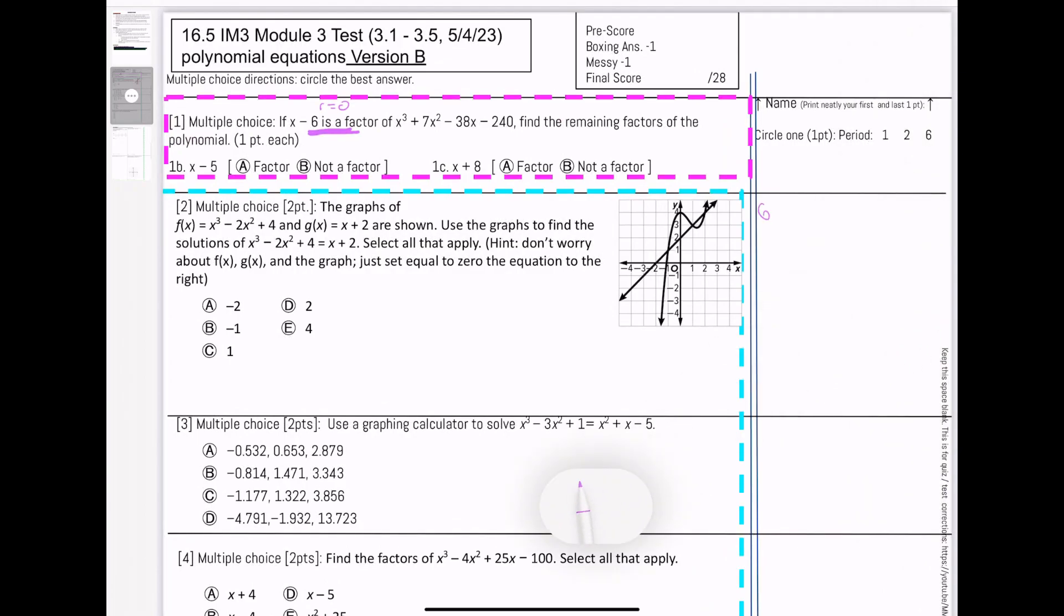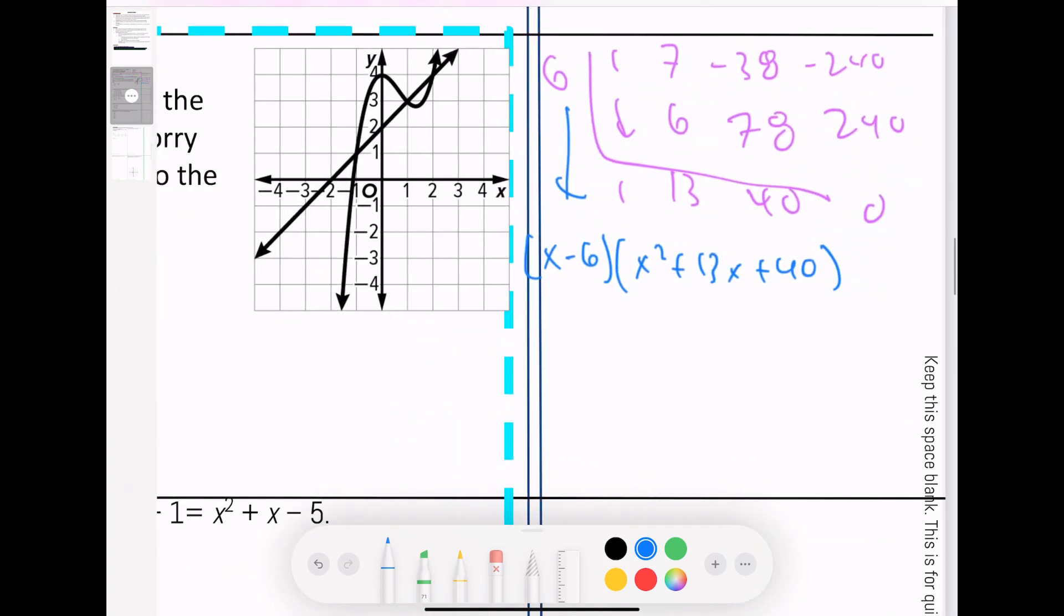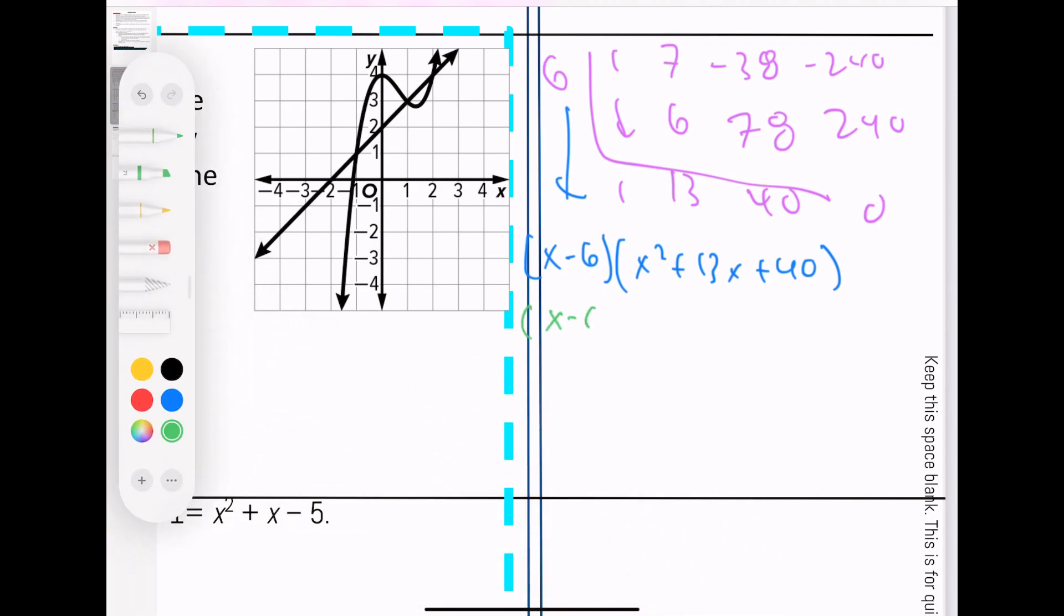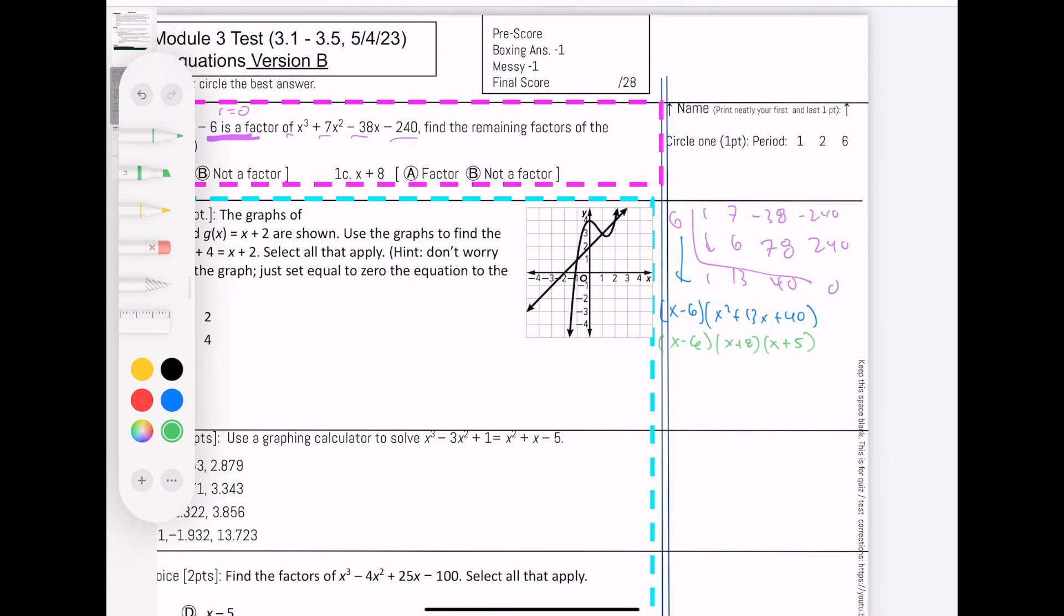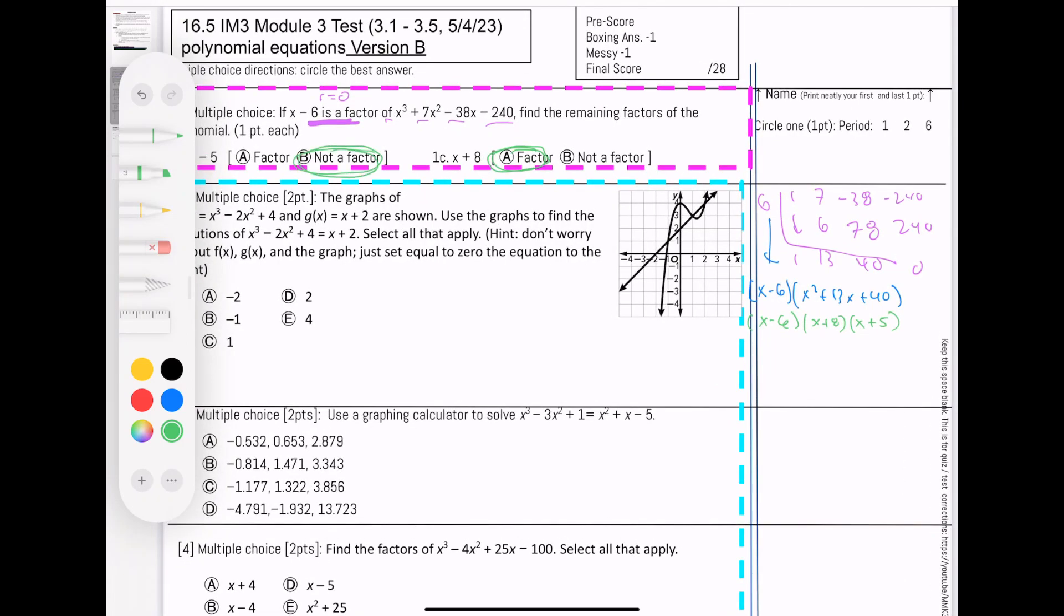I'm going to use synthetic division because it's fast. Using coefficients 1, 7, negative 38, negative 240. Bring it down, multiply, add. 13 times 6 gives me 78, that will give me positive 40, 240, and then it'll be zero. So this means you have x minus 6 times x squared plus 13x plus 40. We do synthetic to get it to quadratic, and I can factor from here. Two numbers that multiply to be 40, I'm thinking 8 and 5. So is x plus 8 a factor? It is. And is x minus? No, it's not, because that one says a plus.